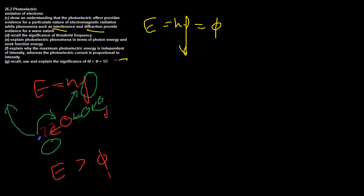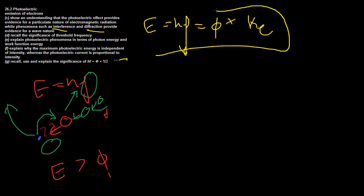Everything else an electron has gets converted into kinetic energy. Think of the energy as the total money you give a prisoner — he needs the minimum amount, the bail, to escape jail, and everything else goes to his enjoyment of life, his prosperity. That's the kinetic energy. That's how photons give energy to electrons. They have a minimum energy that is lost in escaping the atom, and everything else is kinetic energy. That's where this equation comes from, and you can rearrange it in many ways.